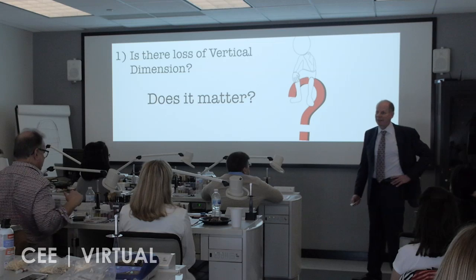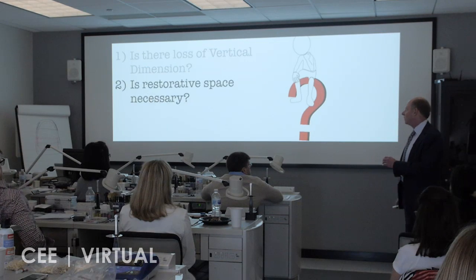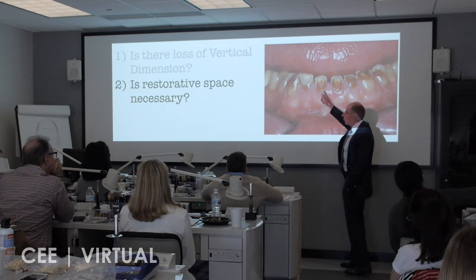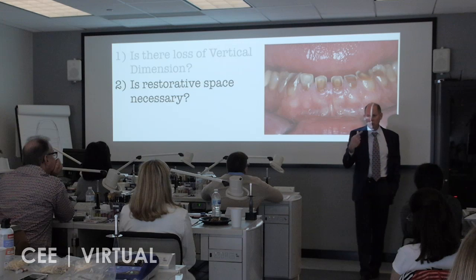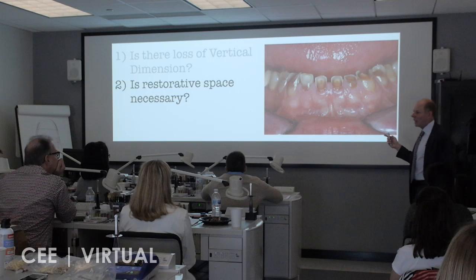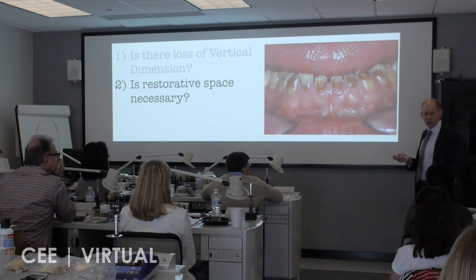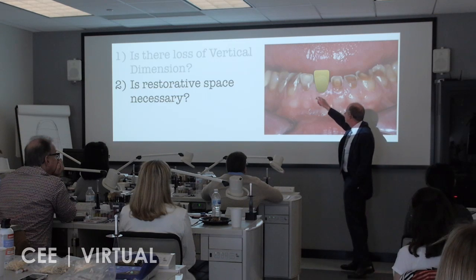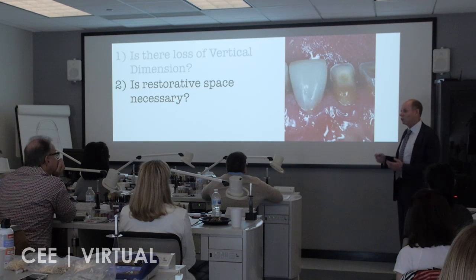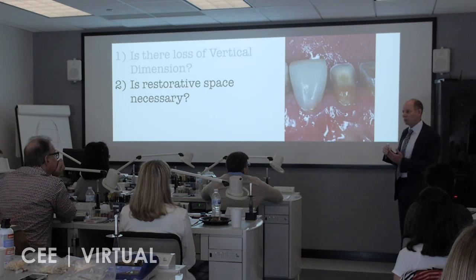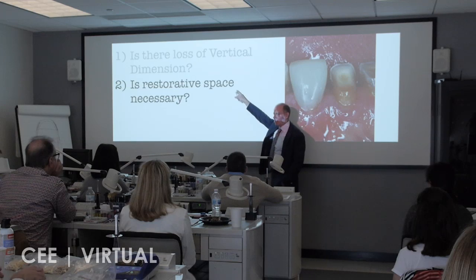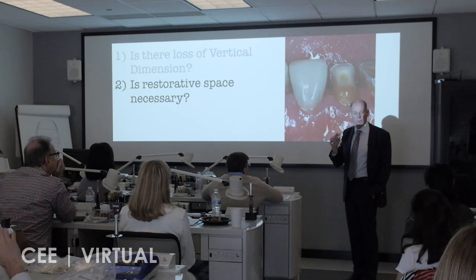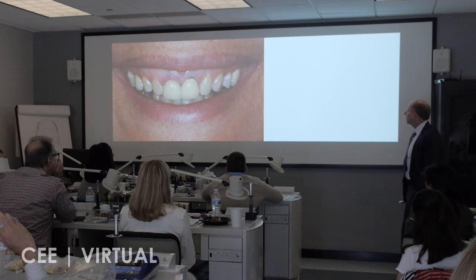The question of whether they've lost vertical dimension doesn't really matter to me. The real question is: do I need restorative space? Do I need room to rebuild these teeth? If I look at Sam and I want to create natural-form lower incisors, can I do that without changing his vertical dimension? Possibly. My goal is to create that. If I'm going to do some bonding, do I need to open his bite or are there other options? For me, the key is I need to create restorative space — that's the bottom line.